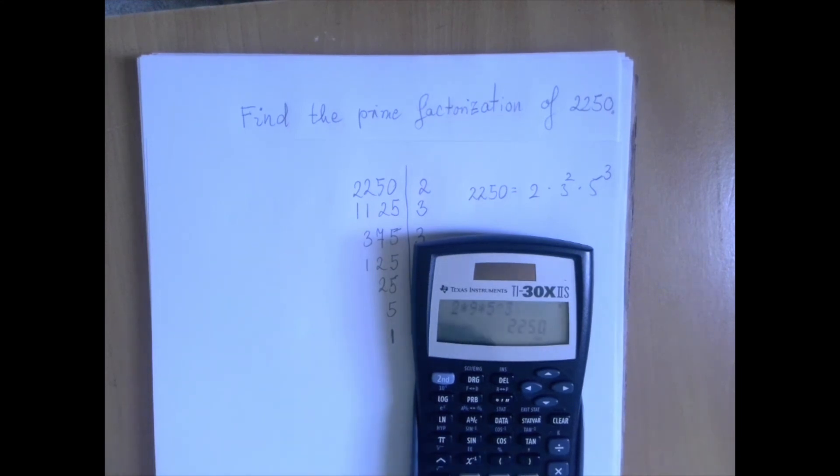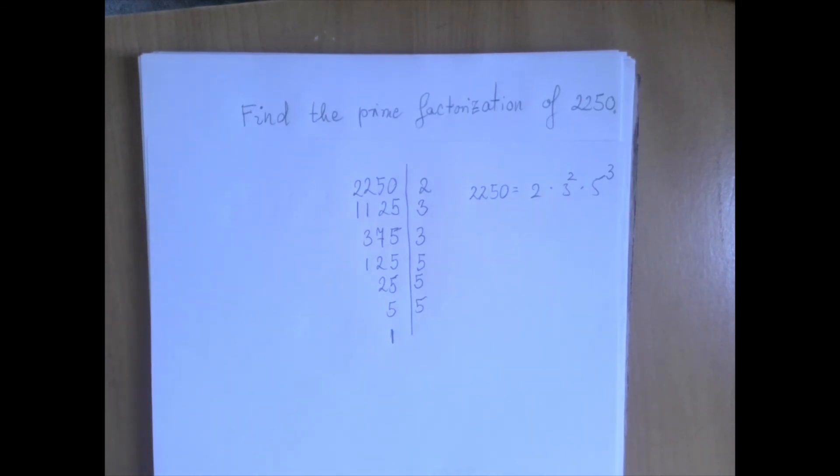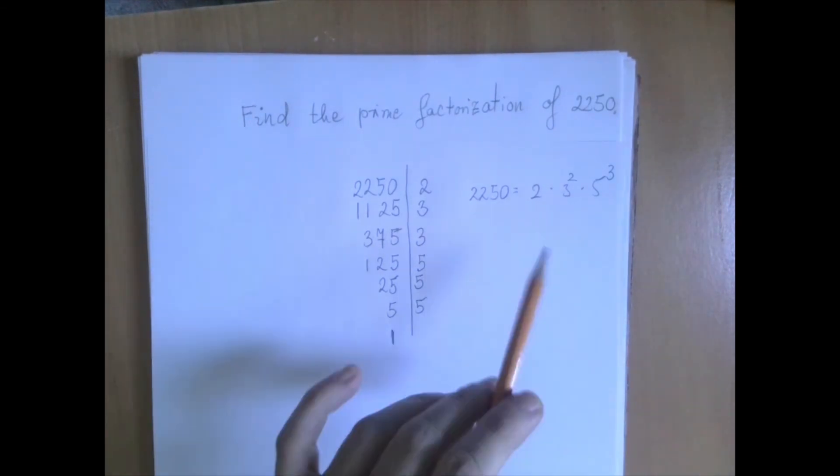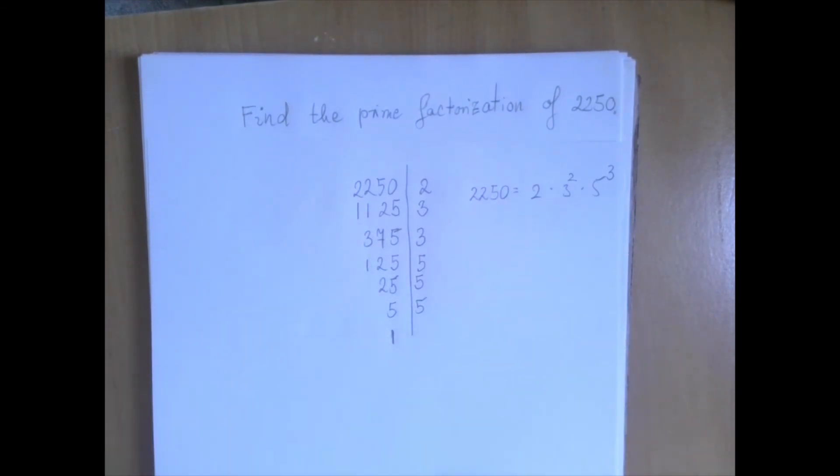At the end, we need to ask two questions. The first question was, does this multiply to the right stuff? And the second question is, are these all prime numbers? And indeed, this is 2 times 3 times 3 times 5 times 5 times 5. So this is the only prime factorization for our number. Thank you for watching.